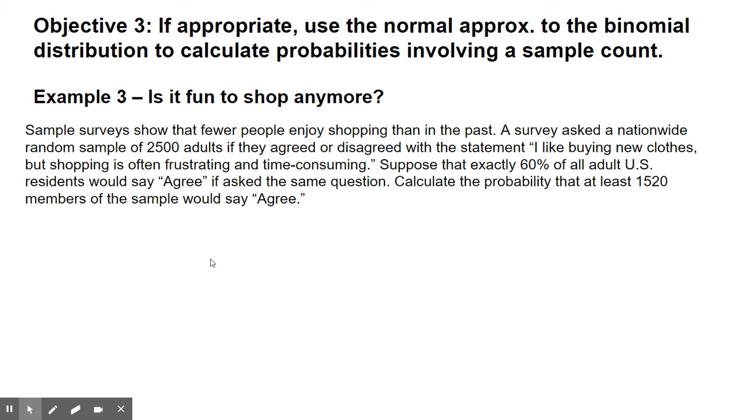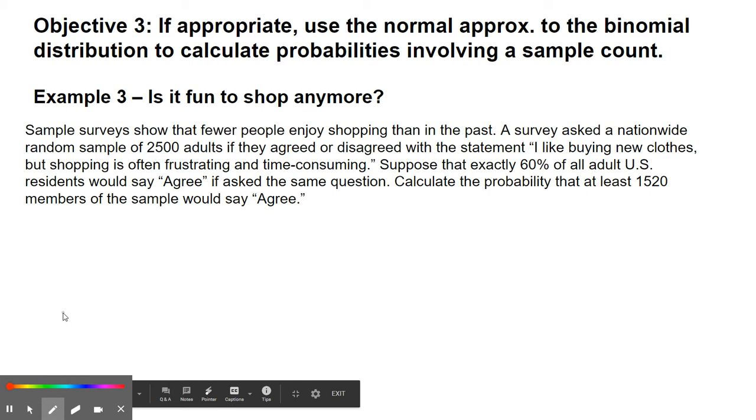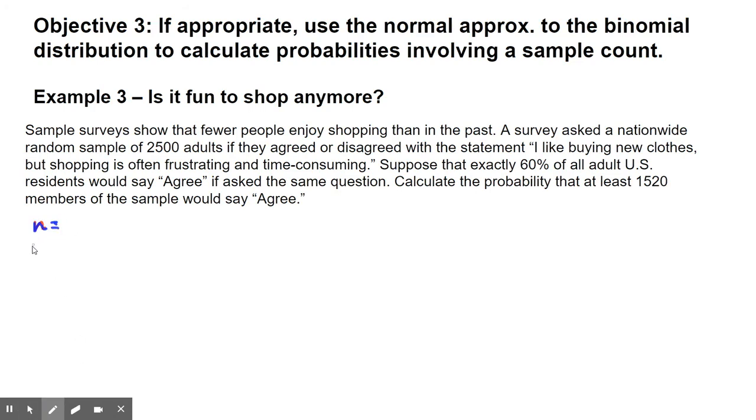So let's do a couple things before we get into this, the normal distribution. First, let's go ahead and find our mean and our standard deviation. So to do that, we need our n value and our p value. n is your sample size, so random sample of 2,500 adults. p is your proportion, it's the population value, 60%.